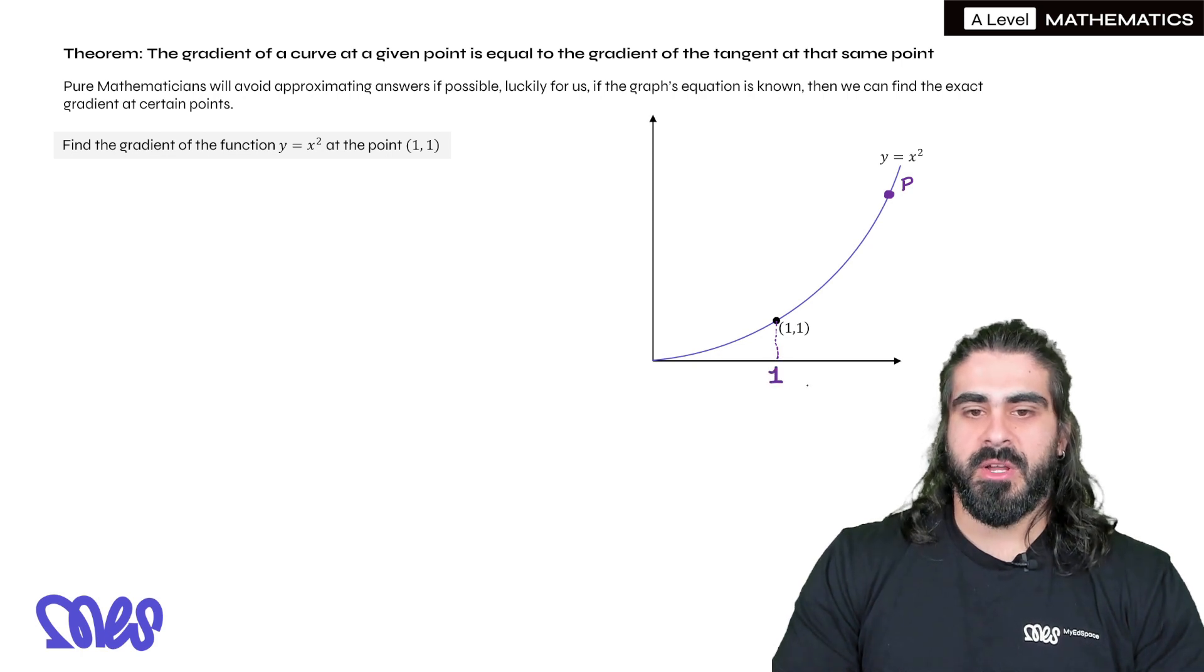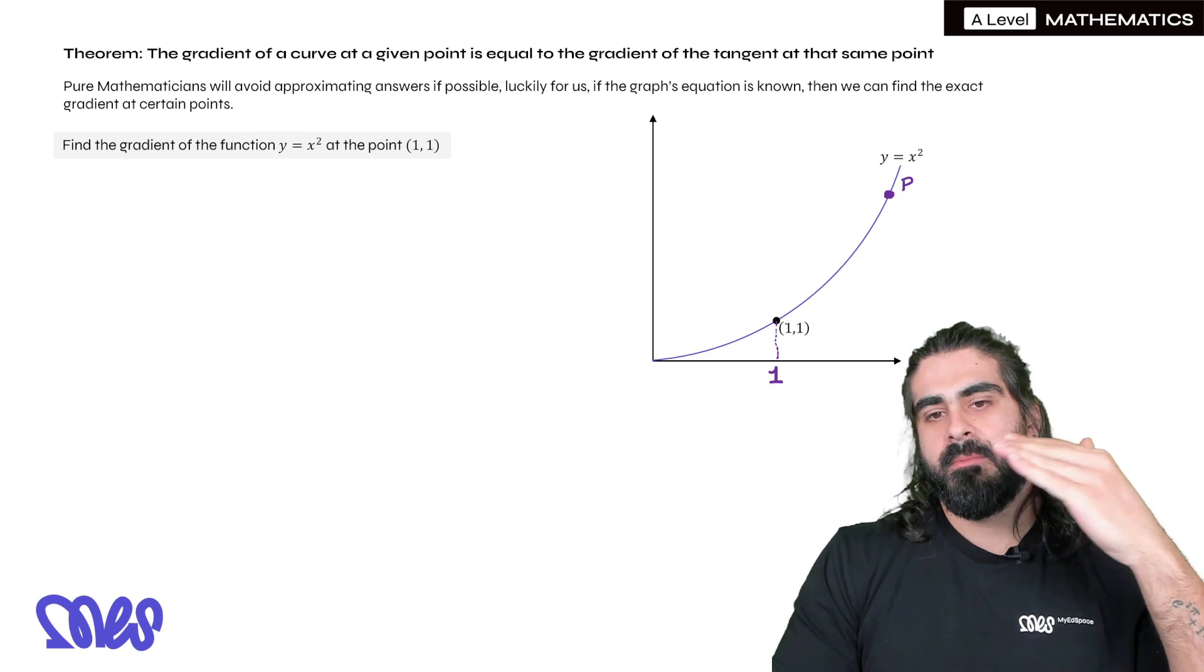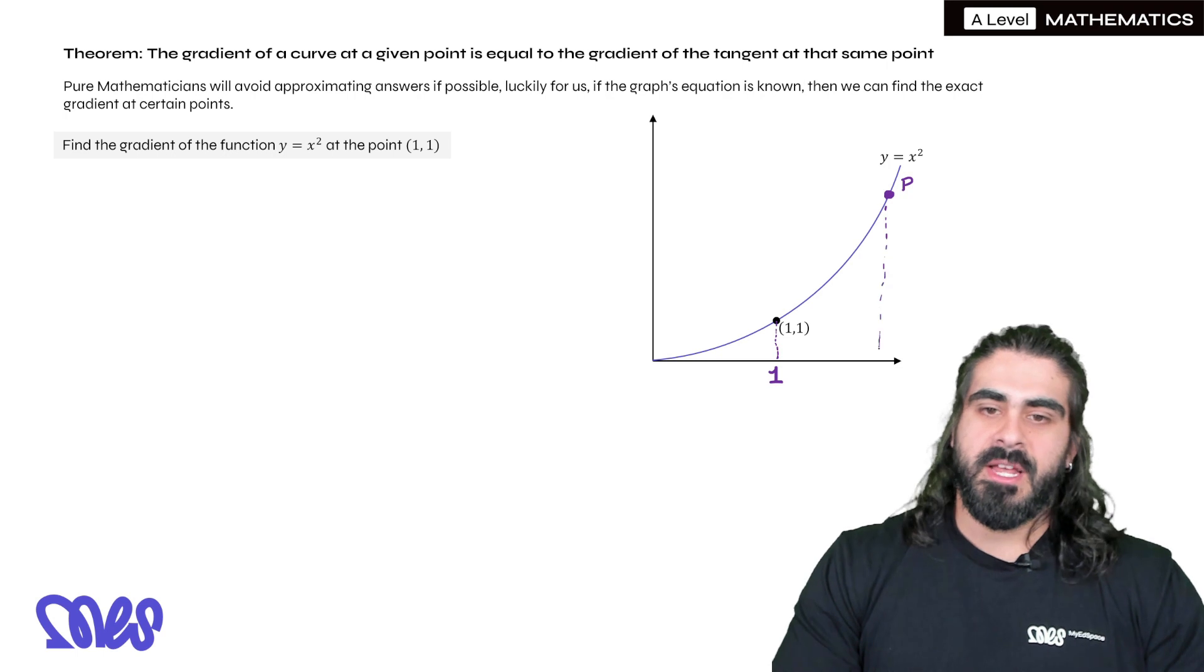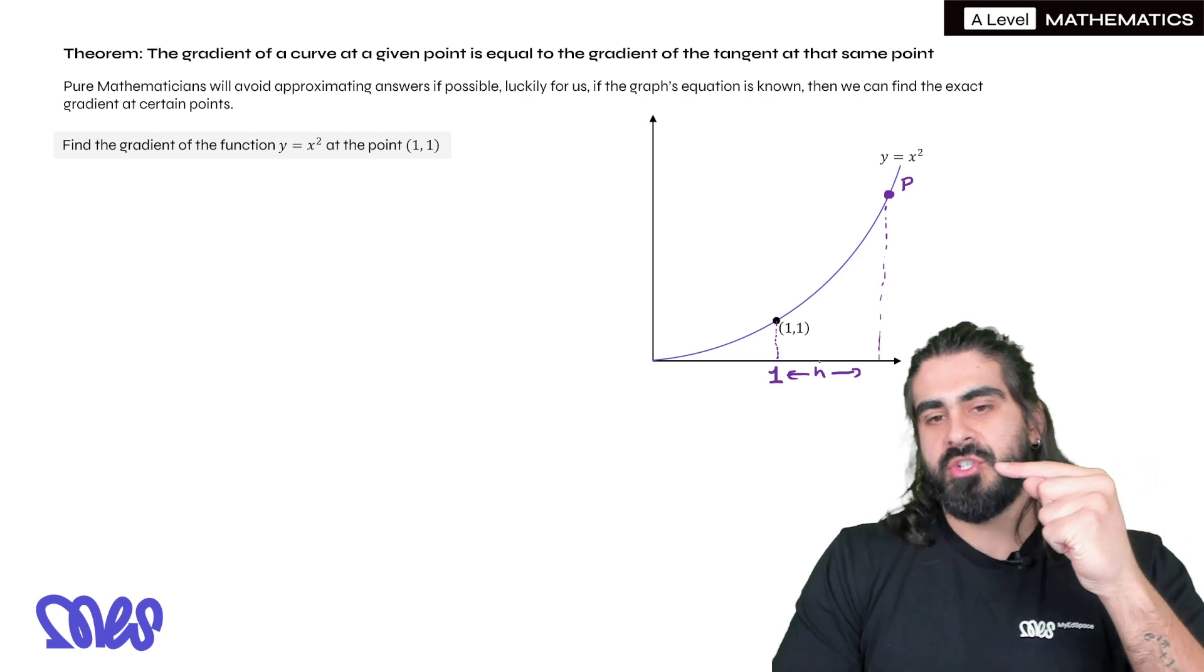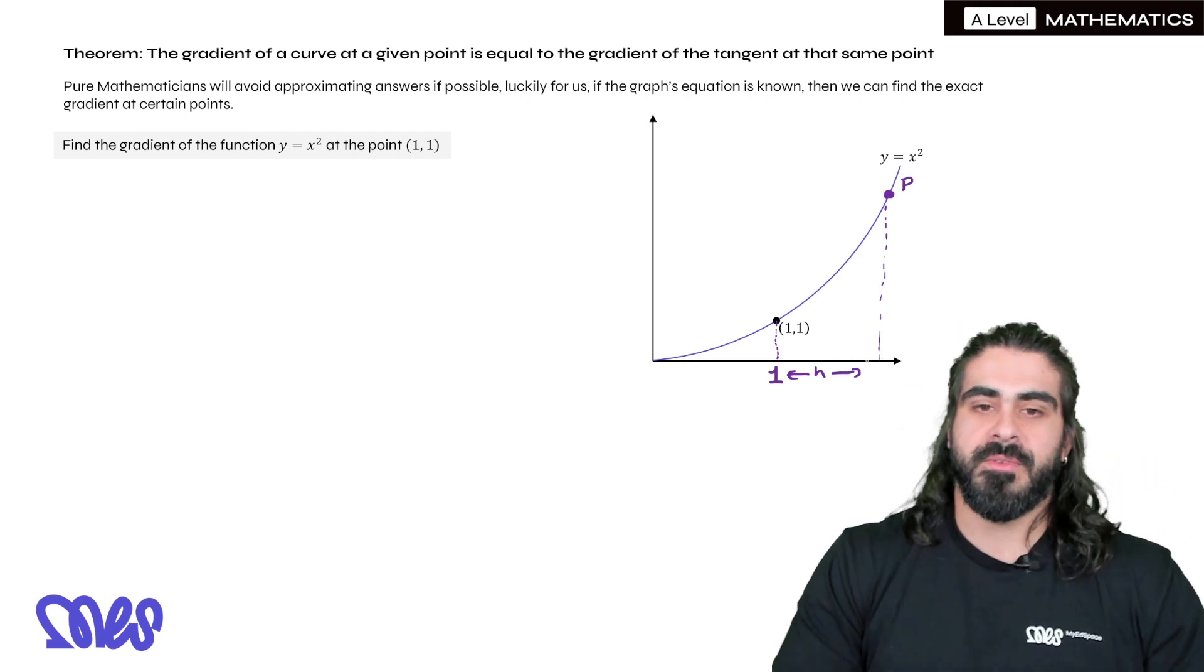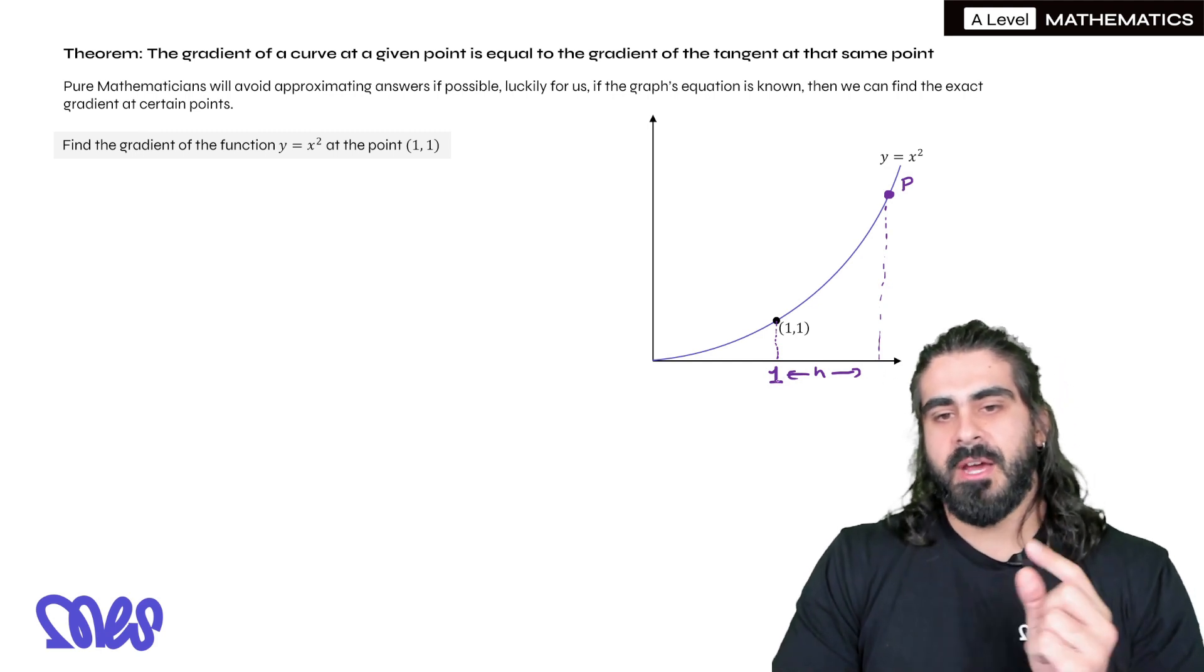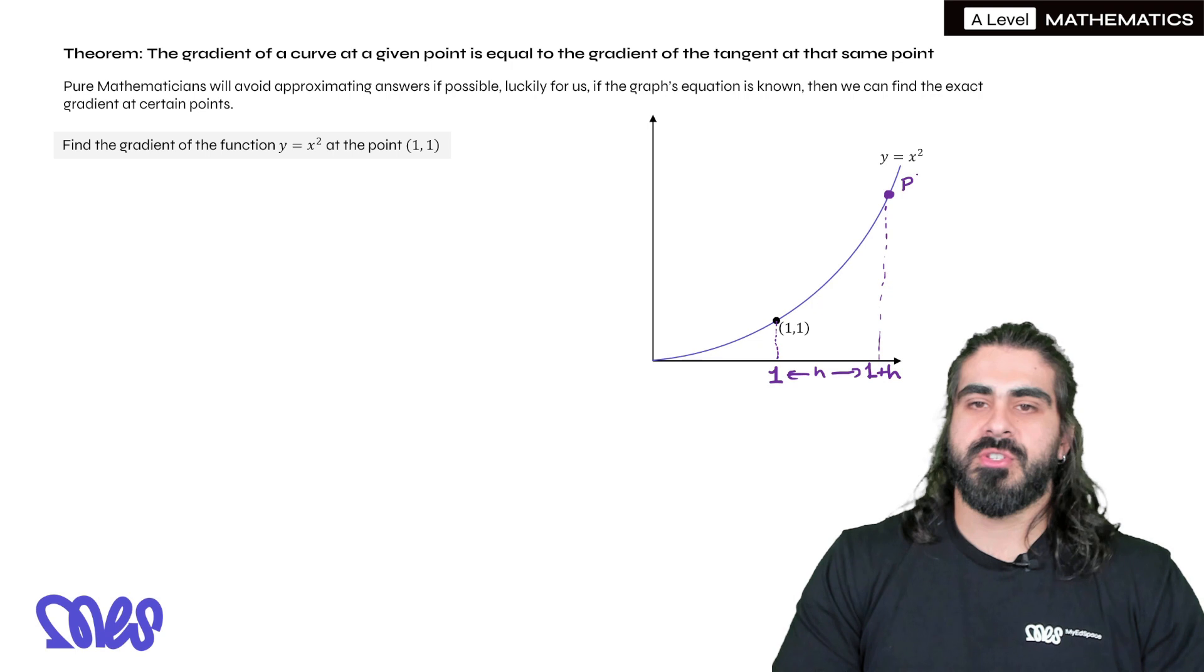So this x value here is one. All I did was I moved some amount to the right to get to this point P. Now we like to use h to represent that distance. I just went some distance h to the right on my graph. So if the x value here is one, what would the x value of P be? Well it's one, and we're going h to the right, so it's just 1 + h.